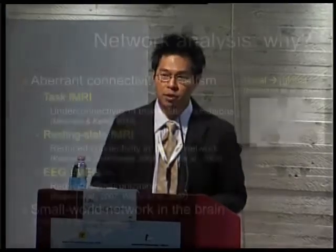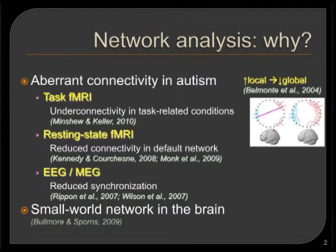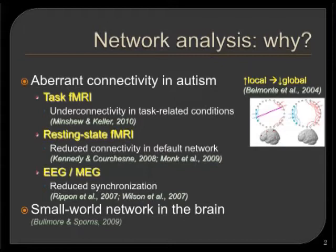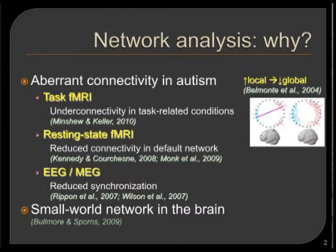The first research question is: why do we apply network analysis? The main reason is that there is a prevailing theory of aberrant connectivity in autism, mentioned repeatedly by previous speakers. It's mainly addressed by task fMRI studies where people found under-connectivity in task-related conditions. Also in resting state fMRI studies, people noticed disconnectivity or reduced connectivity within the default network using a seed-based approach. In EEG or MEG studies, people found reduced synchronization. These all support problems with connectivity, but there are also theories about increased local connectivity resulting in decreased global connectivity.